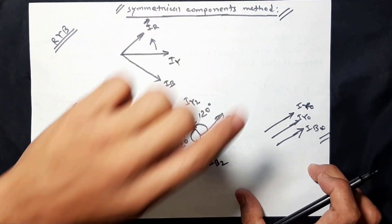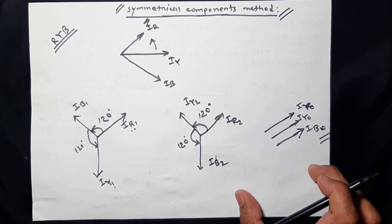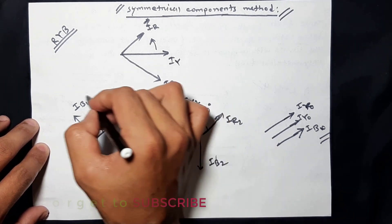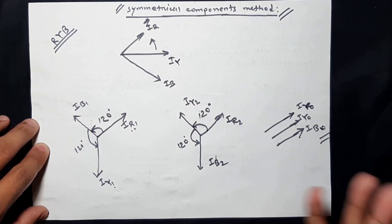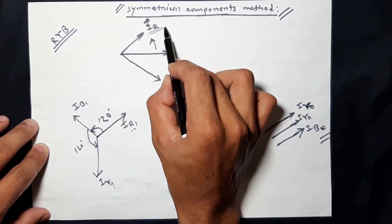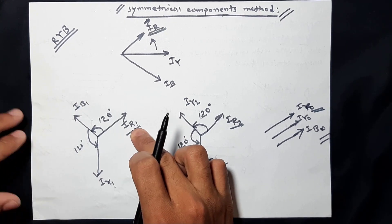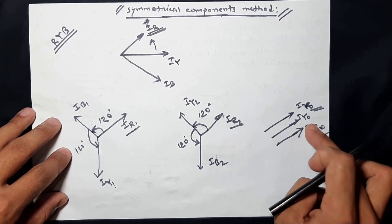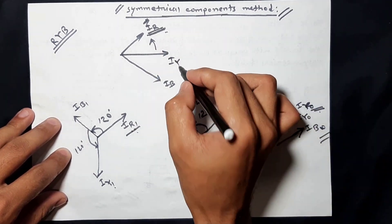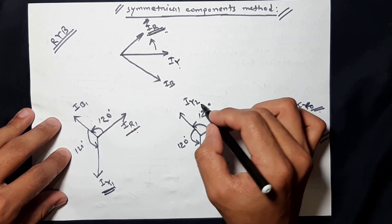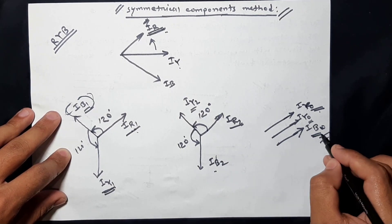We set up the symmetrical component equations. For each phase, we decompose into positive, negative, and zero sequence: IR = IR1 + IR2 + IR0. For yellow phase: IY = IY1 + IY2 + IY0. For blue phase: IB = IB1 + IB2 + IB0. That is clear.